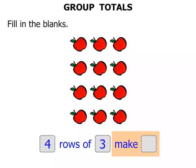Again this is the total. One, two, three, four, five, six, seven, eight, nine, ten, eleven, twelve. Let's write the twelve there. So four rows of three make twelve. Fantastic!